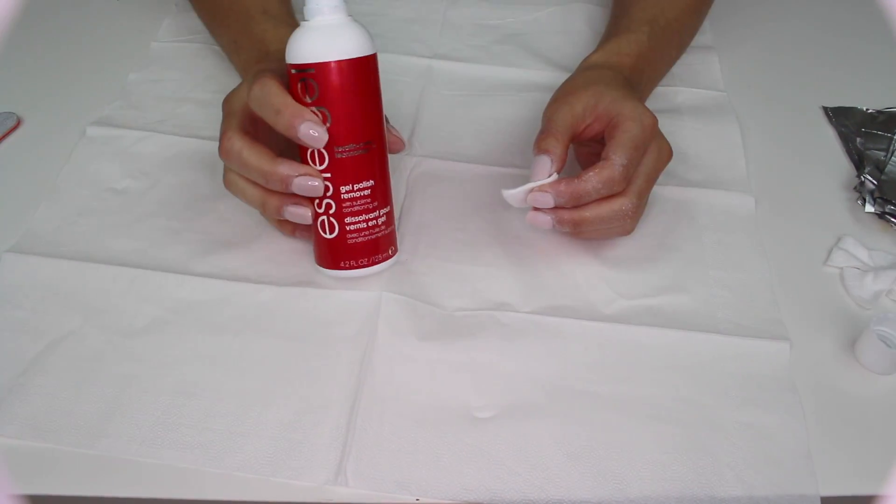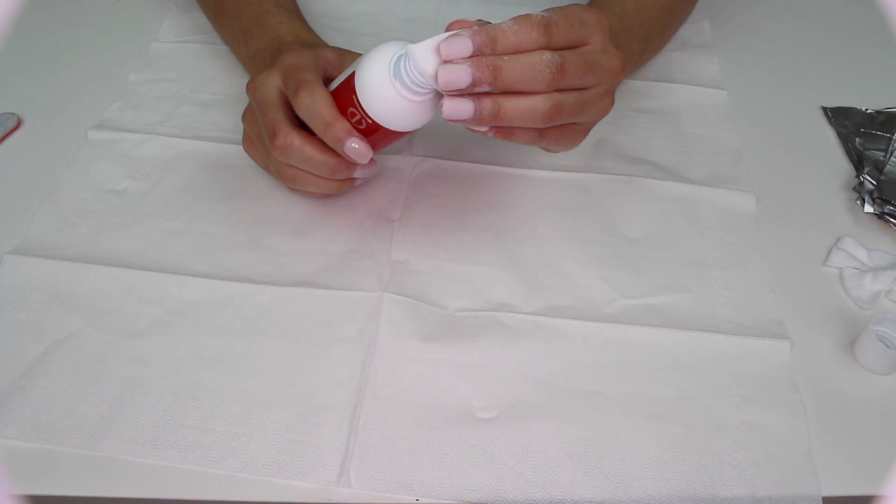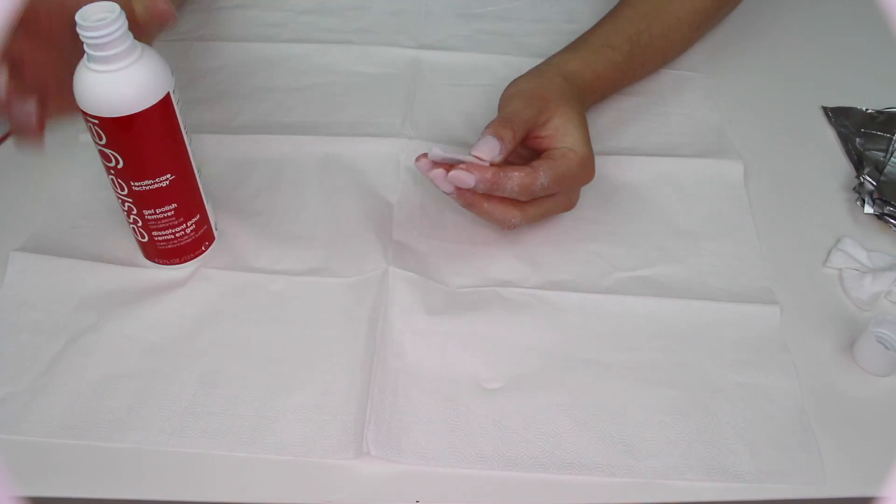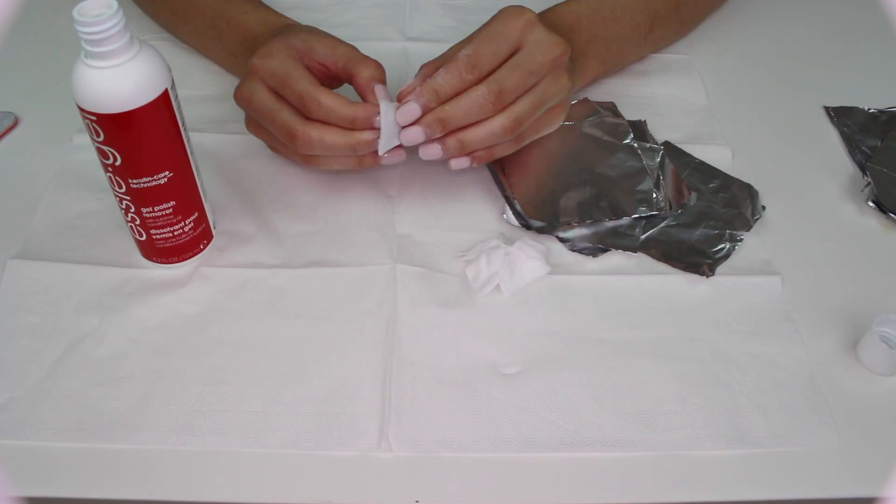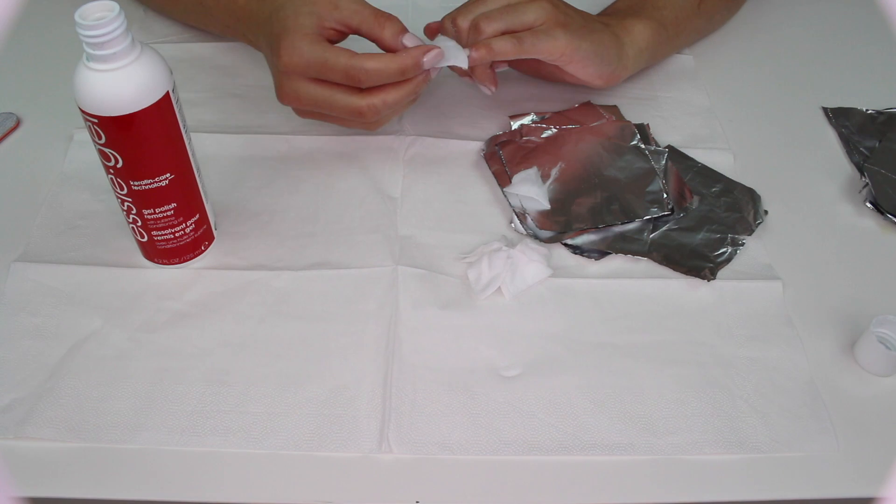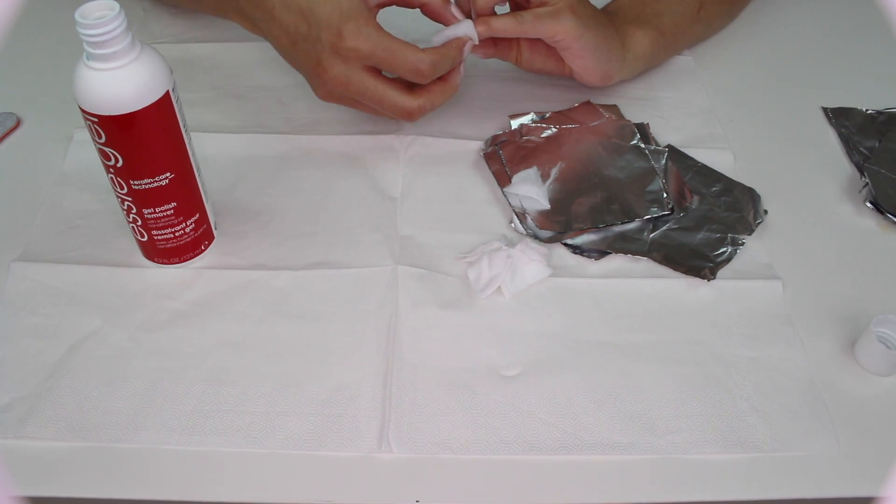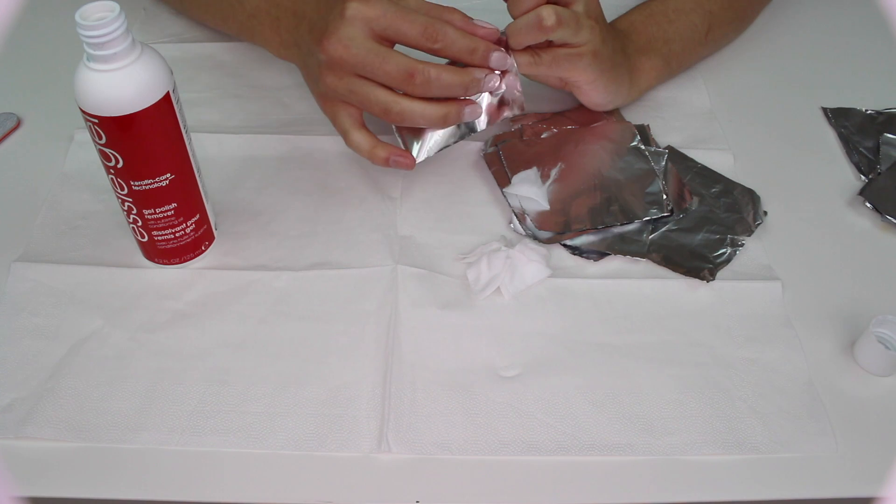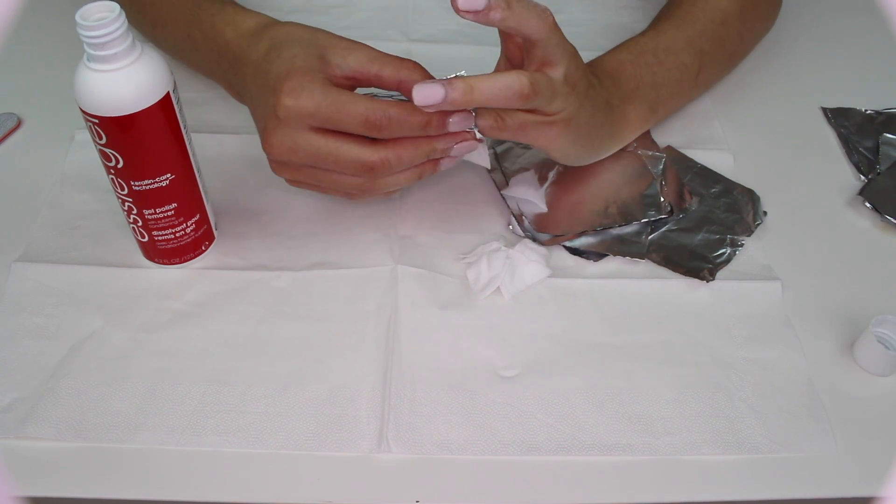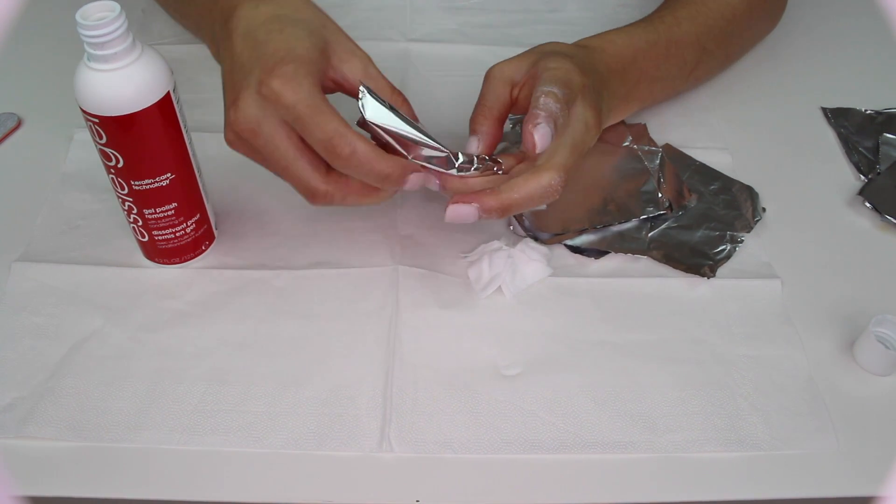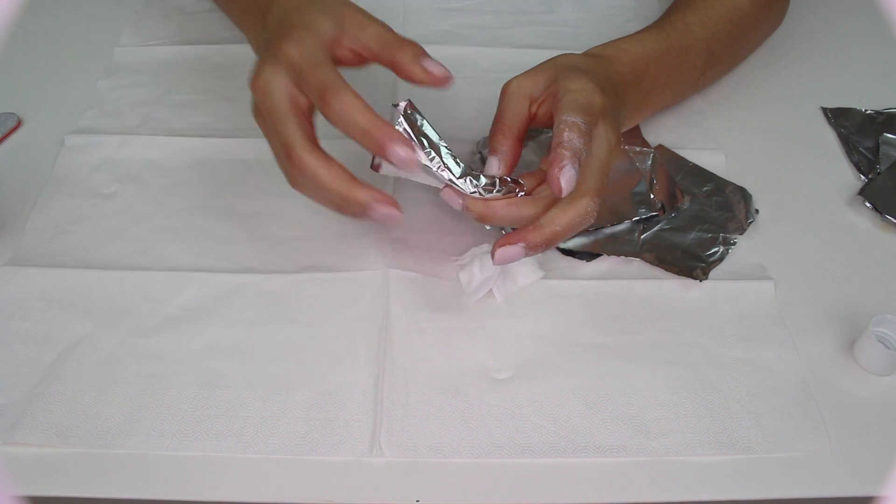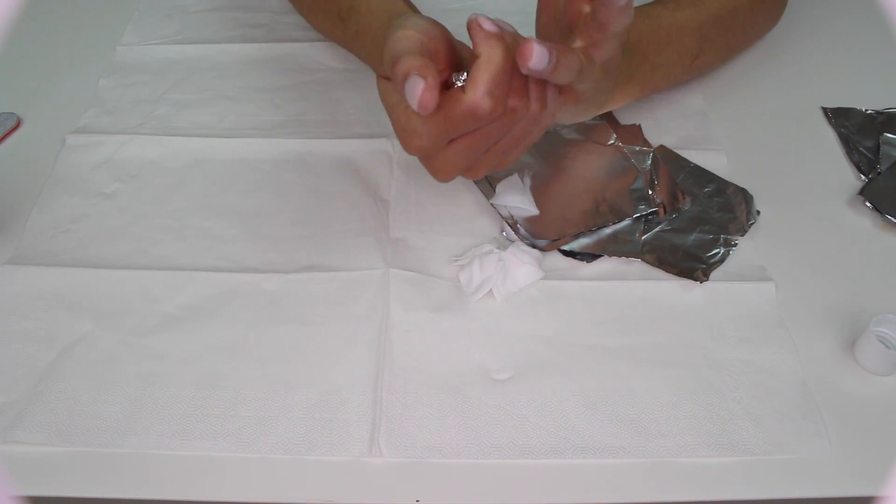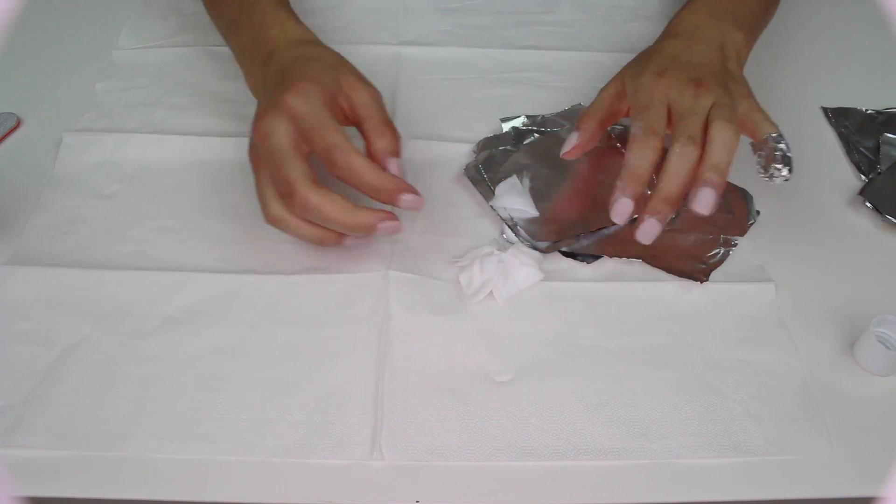I'm going to do one hand at a time. Now I get my gel polish remover, get some cotton wool. Make sure this is soaked, it's got a good amount on there. I half the cotton wool because it's very thick. Put it over the nail, grab my foil, put it on top. And then wrap it like that, make sure it's tight so it doesn't move.